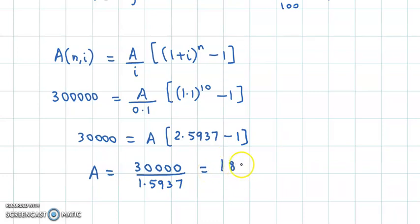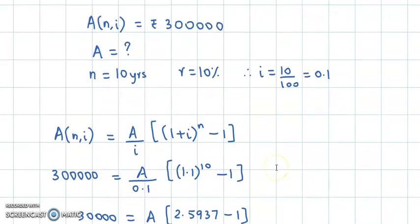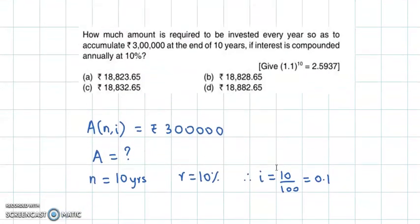1.5937. We divide and we get the answer as 18,824.119. Now the closest answer is option A. The value we get is 18,824. There's a slight difference, but yes, the closest value is option A.